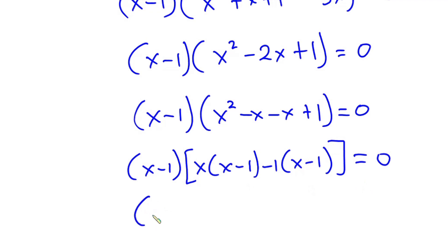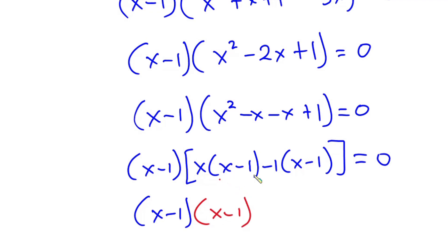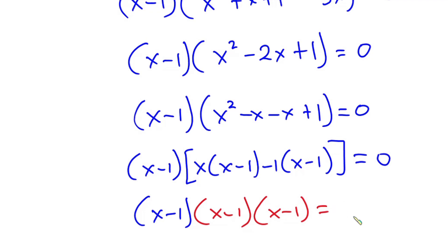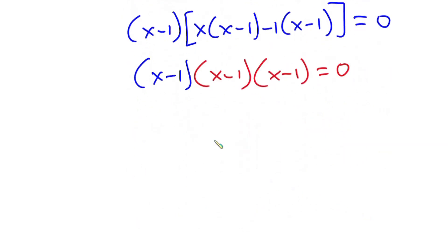So we have x minus 1 on the outside. Now considering what is in the square brackets, we have x minus 1 and also x minus 1. So factoring, we have x minus 1 into x minus 1 into x minus 1, and this is equal to 0. This can also be written as x minus 1 to the third power is equal to 0.